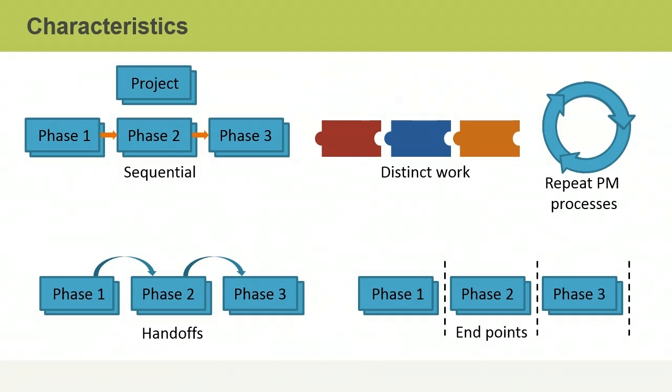Phases in a project have several characteristics. They are sequential. They each involve distinct work. They repeat the project management processes from initiating through closing. They each end with a handoff of work called a deliverable. Finally, they have natural endpoints at which the continued viability of a project is assessed. The endpoints are sometimes called gates.